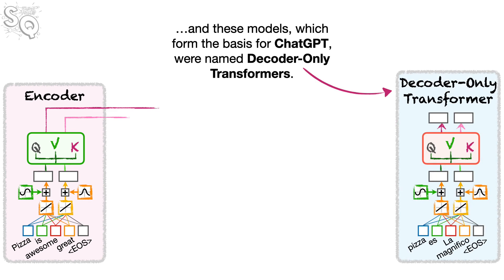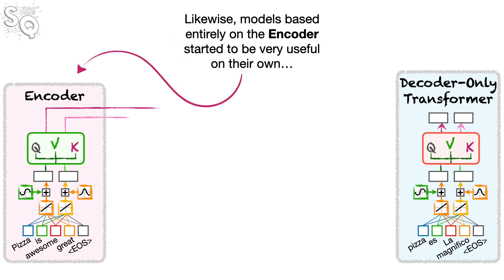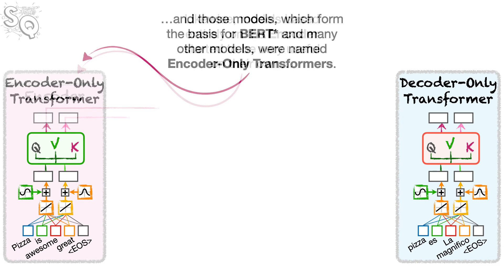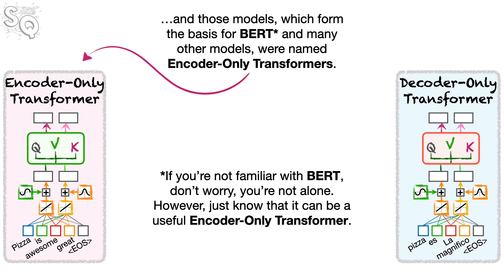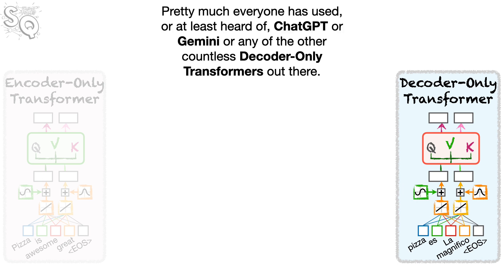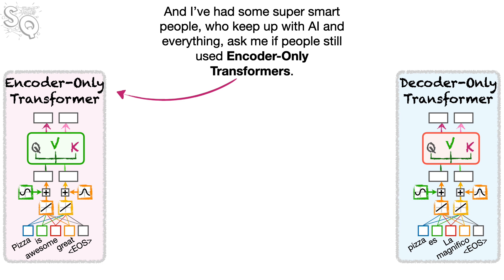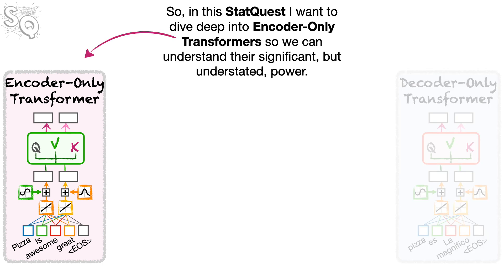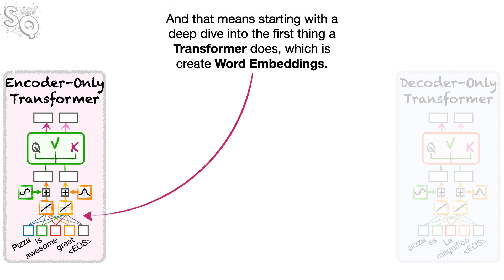It turned out that we could generate text, including translations, with just a decoder. These models, which formed the basis for ChatGPT, were named decoder-only transformers. Likewise, models based entirely on the encoder became very useful on their own, and these models — which formed the basis for BERT and many others — were named encoder-only transformers. Over the years, decoder-only transformers kind of stole the show, but in this StatQuest I want to dive deep into encoder-only transformers to understand their significant but understated power. And that means starting with a deep dive into word embeddings.